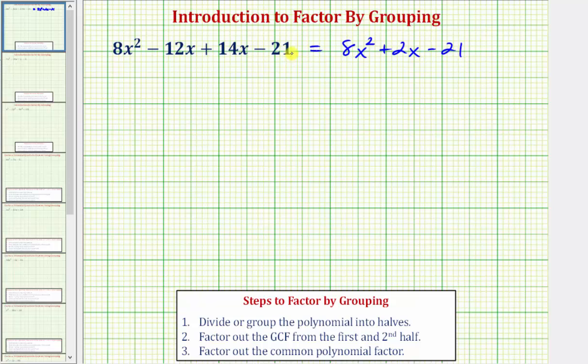Starting with the given expression, step one is to divide or group the polynomial into two halves. Because we have four terms, the first half would be 8x² minus 12x.